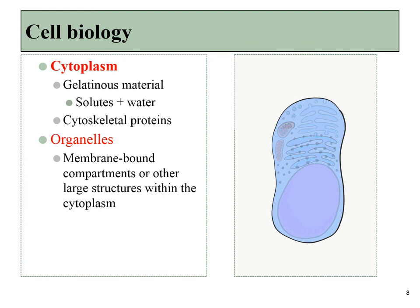On the other side of the plasma membrane we find cytoplasm and organelles. The cytoplasm is a gelatinous material — mostly water plus solutes such as nutrients, electrolytes, proteins, and other large molecules, including cytoskeletal proteins. Larger structures within the cell are called organelles, usually surrounded by their own lipid bilayer — another phospholipid bilayer separating the organelle from the cytoplasm.